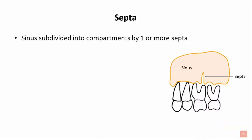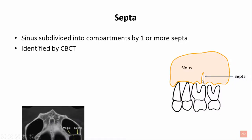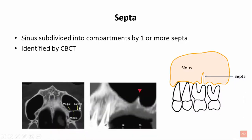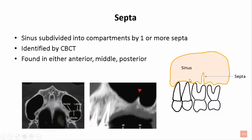The maxillary sinus has an anatomic variation called septa. The septa divide the sinus into compartments; there could be one or more septa present. Septa can easily be identified using CBCT, which shows compartmentalization of the maxillary sinus. The septa can be present in the anterior, middle, or posterior region of the maxillary sinus, and their height varies from 0 to 20.6 mm.